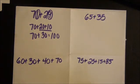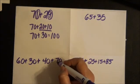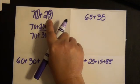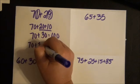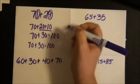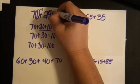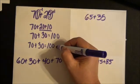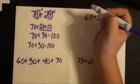I could also decompose the numbers. I know that 71 is the same as 70 minus 1, and 29 is the same as 30 minus 1. So, I can say 70 plus 30 is 100. I need to minus 1 from here to make it 70, and I need to add 1 to here to make it 30. So if I do that, if I subtract 1, it's 99, and if I add 1, it's 100. So 71 plus 29 is 100.